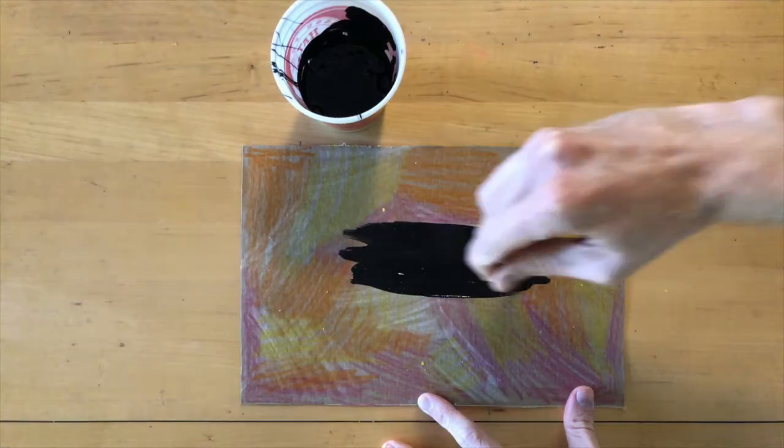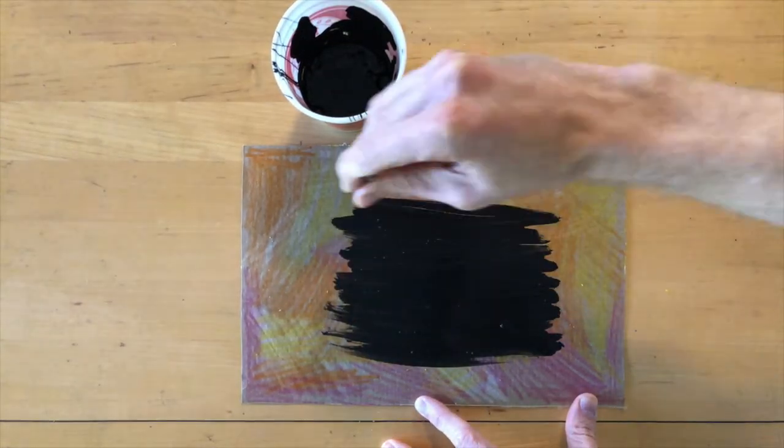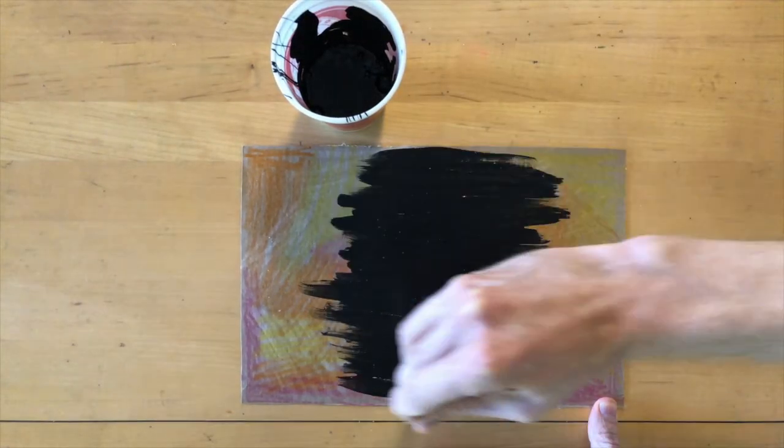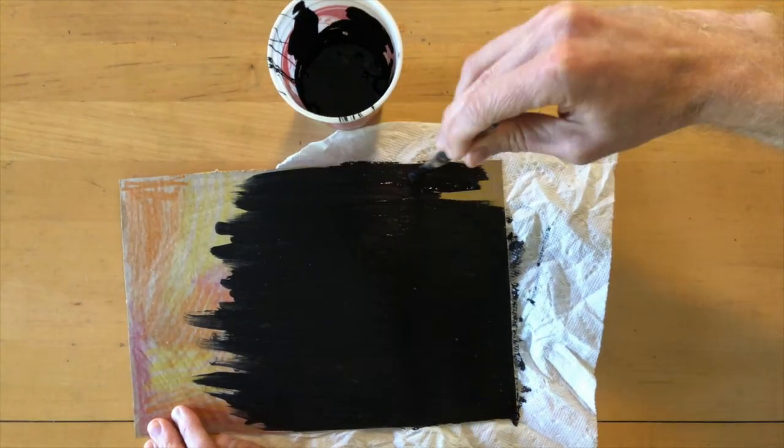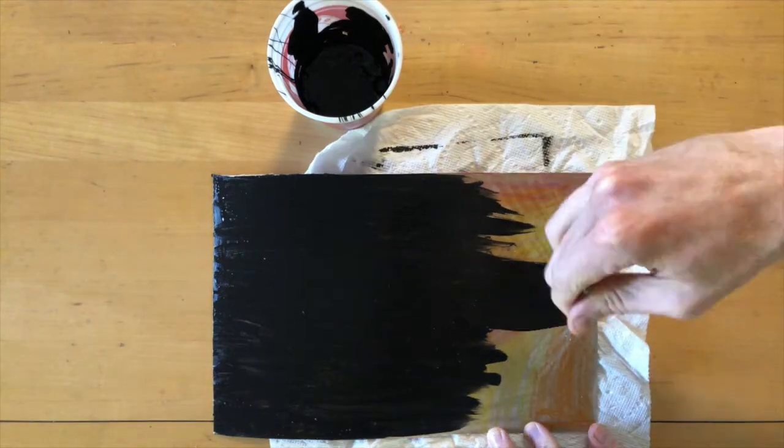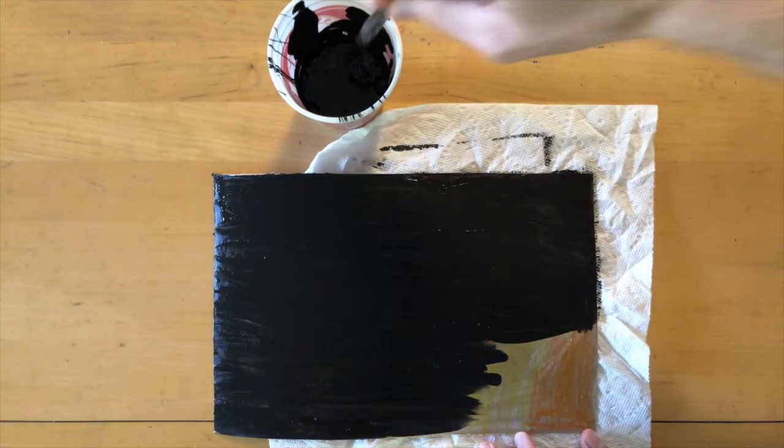Mix that together and begin to paint that over your crayon colored surface. Make sure you go all the way to the edge and apply it as evenly as you possibly can. I was careful to not paint on my table, so I put down a paper towel.